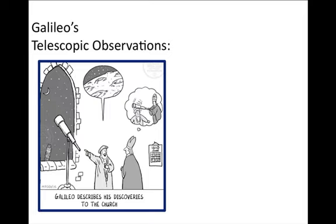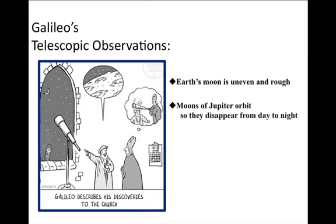Galileo made several telescopic observations, which were controversial because they challenged the views of the Catholic Church. His observations included: Earth's moon is uneven and rough, which means it is not perfect. Moons of Jupiter orbit, so they disappear from day to night, which means planets do not orbit around Earth as the center. And the phases of Venus are similar to the moon, which means the moon is not special.